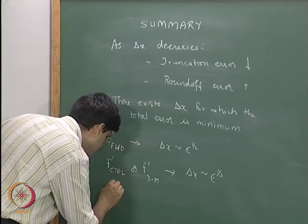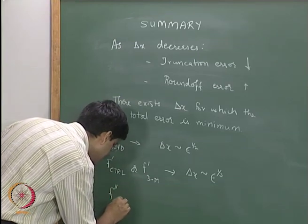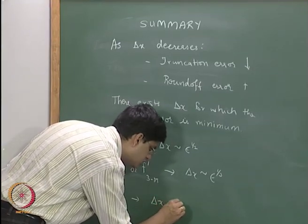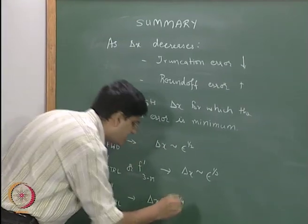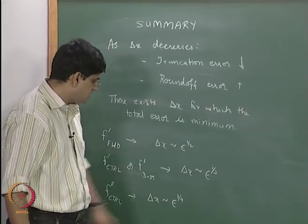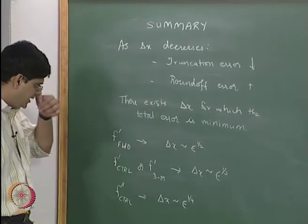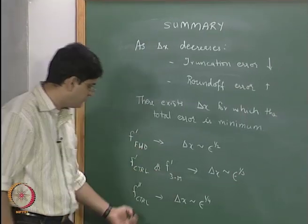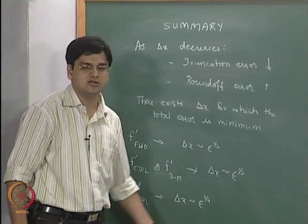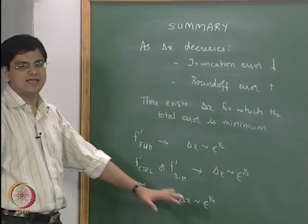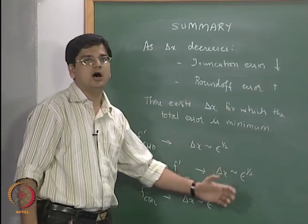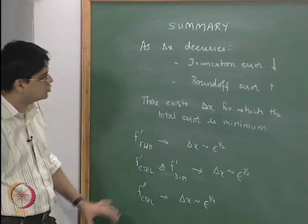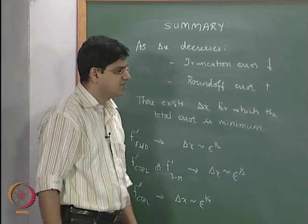And to use f double dash using central difference formula, delta x is going to be proportional to epsilon to the power 1 by 4. I am just stopping here mainly because f dash using forward difference, f dash using central or 3 point difference, and f double dash using the central difference formula are likely the most common numerical differentiations that a typical chemical engineer encounters. So, I would not go into anything beyond that.